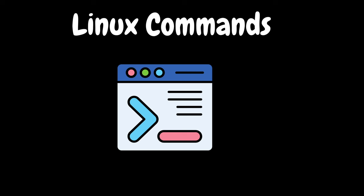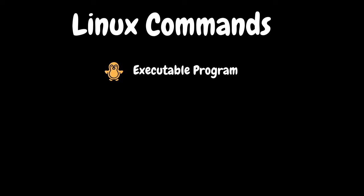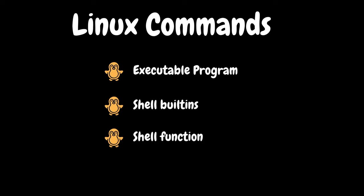Linux commands are mainly classified into four categories. First, executable programs — like the files available in /usr/bin — which can be compiled binaries such as programs written in C or C++, or programs written in scripting languages such as shell, Perl, Python, Ruby, etc. Second, shell built-ins: bash provides a number of commands internally called shell built-ins, which are built into the shell itself. Third, shell functions: small shell scripts integrated in the environment. And finally, aliases: a command that we can define ourselves, built from other commands.